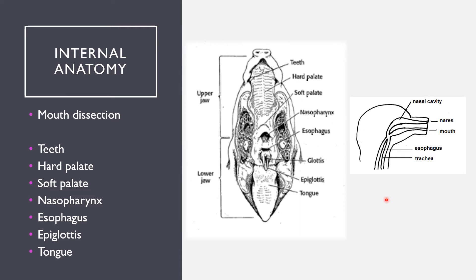Starting with internal anatomy, one of the first cuts you make before dissecting into the abdominal and thoracic cavity is to dissect part of the mouth. This allows you to see the esophagus, the nasopharynx, and the epiglottis. Those four tubes intersect right here in the back of the throat.